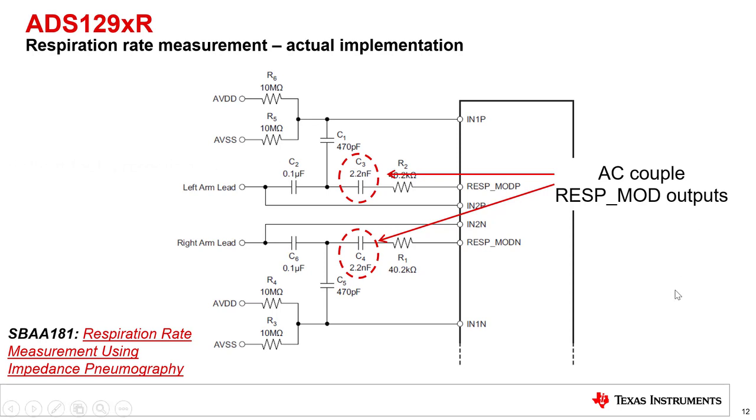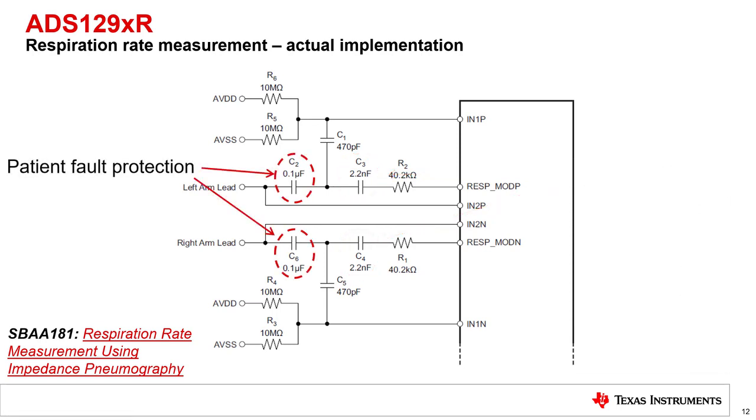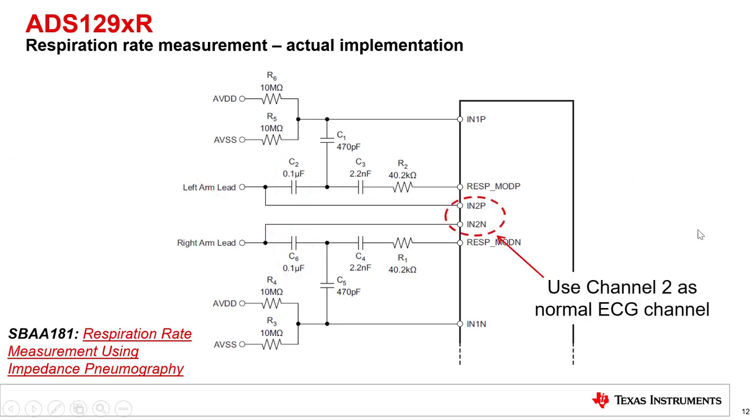Finally, C2 and C6 are added for additional fault protection. The larger patient protection resistors, which are normally used to limit the DC current, cannot be placed directly on the respiration path. The noise from the resistors plus the DC component of the resulting demodulated waveform will prevent the respiration waveform from being resolved.